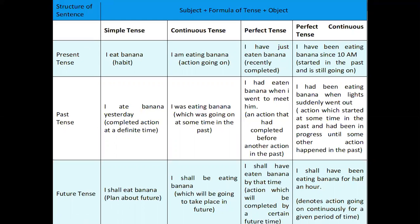Present continuous tense: 'I am eating banana' — this action is going on right now. Present perfect tense: 'I have eaten banana.' Present perfect continuous tense: 'I have been eating banana since 10 a.m.' When you use 'since,' you indicate an exact point in time, whereas for a span of time you use 'for' — 'I have been eating banana for the last half an hour.'